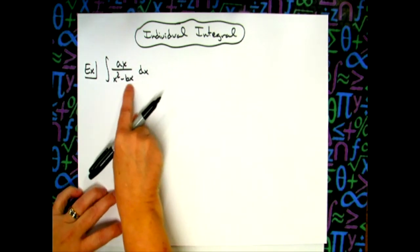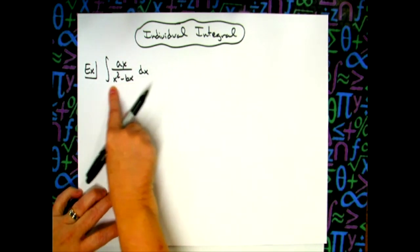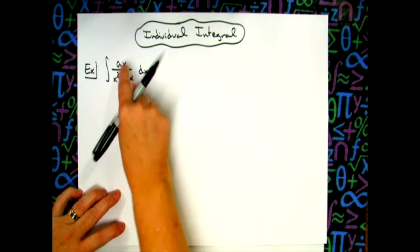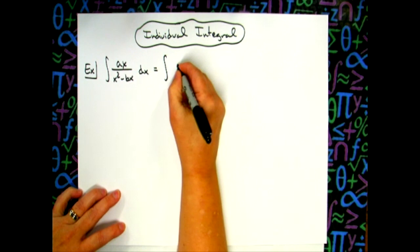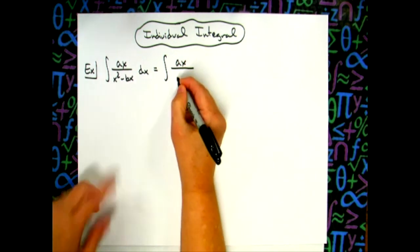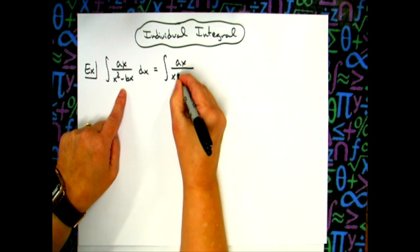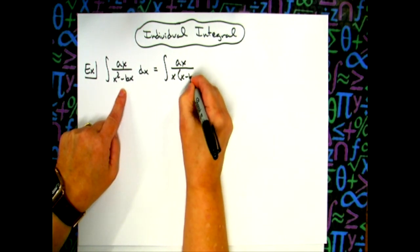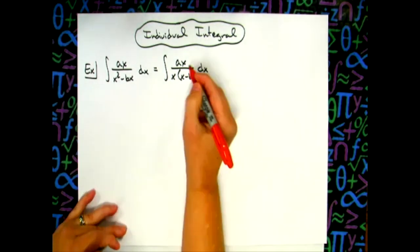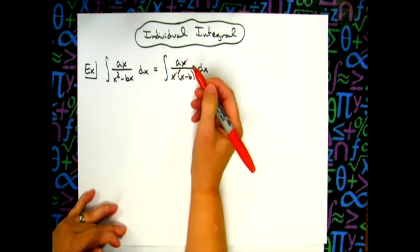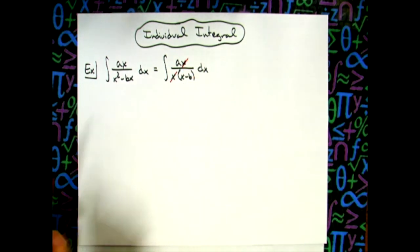The first thing I'm going to do is factor out an x on the bottom so that I can cross out some x's. I'll have ax in the top, and I'll factor out the x in the bottom, which gives me x times x minus b, and then dx. This algebra manipulation on the original function allows me to cross out those x's.